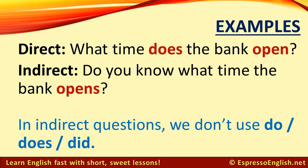Direct: 'What time does the bank open?' Indirect: 'Do you know what time the bank opens?' In indirect questions, we don't use the auxiliary verbs do, does, or did. Notice that the word 'open' in the direct question becomes 'opens' in the indirect question.